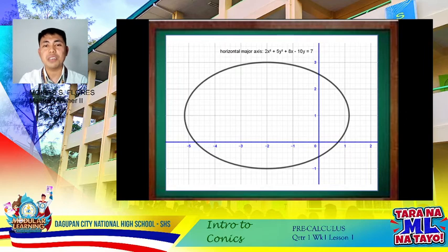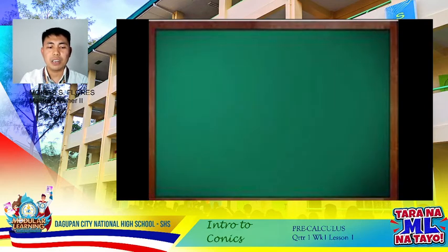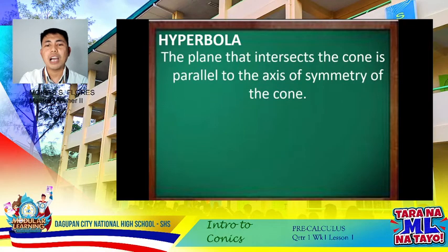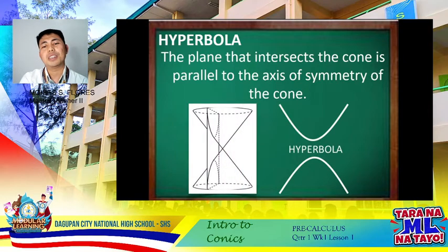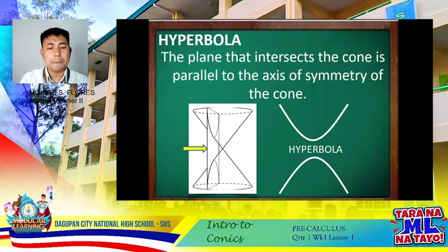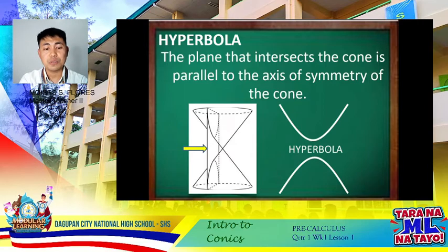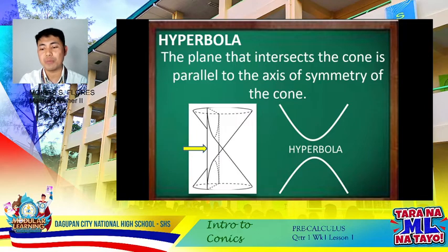So there we have the first three: circle, parabola, and ellipse. Let's proceed with the last type of conics — hyperbola. For a hyperbola, the plane that intersects the cone is parallel to the axis of symmetry of the cone. The plane, not necessarily vertical, intersects both cones to form two unbounded curves, called the branches of the hyperbola.